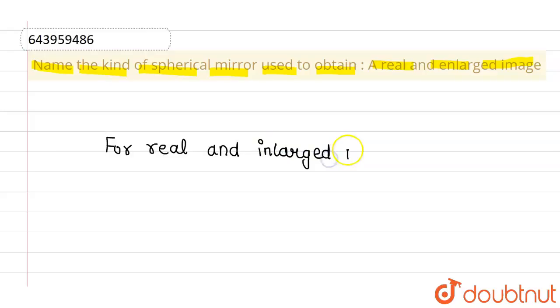Enlarged means zoomed, and real image means which can be obtained on a shade or paper.